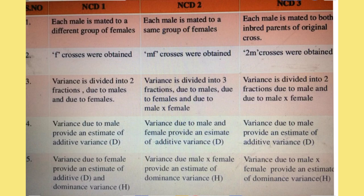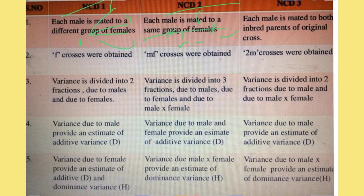Here is the overall comparison of all three NCD designs. In NCD1, each male is mated with a different group of females (M1 crosses F1, F2, F3). In NCD2, each male is mated with the same group of females (M1 and M2 both cross F1 and F2). In NCD3, each male is mated with the inbred parents of the original cross.